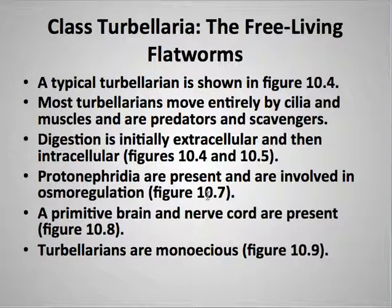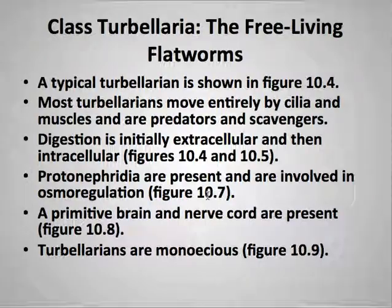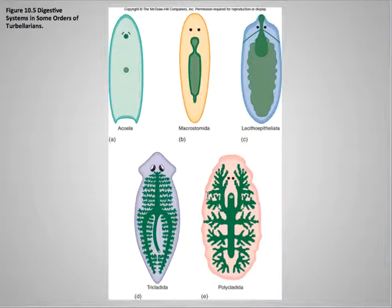Still in the turbellarians — the classic turbellarian is the planarian, which you have already seen in lab. They are the stereotypical representative of the group. You've seen them move; they move entirely by cilia and muscles. They're predatory — you fed them in lab — and they're also scavengers. Their digestion is both extracellular and intracellular. They also have protonephridia, which are involved in osmoregulation. They have a very primitive brain and nerve cord, and they are monoecious.